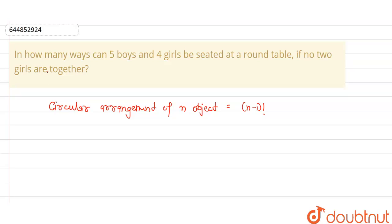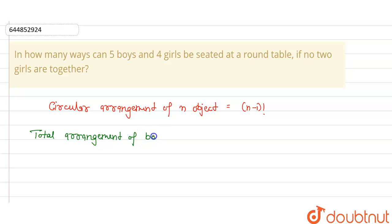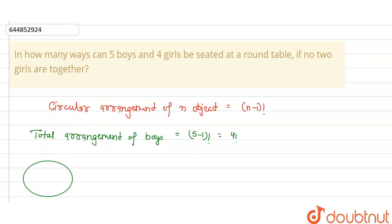For the alternative placement, first we seat the boys. The total arrangement of boys in circular arrangement will be (5-1)! which is 4 factorial.